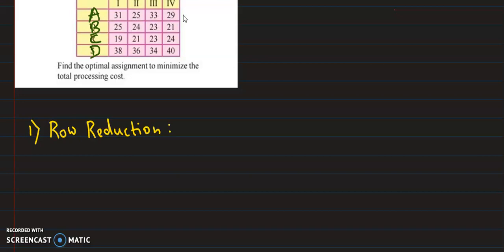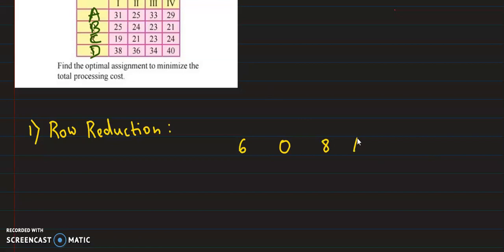We will subtract 25 from this row. So: 31 minus 25 gives 6, 25 minus 25 gives 0, 33 minus 25 gives 8, and 29 minus 25 gives 4. So this is our first row after reduction.